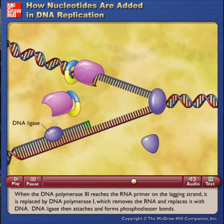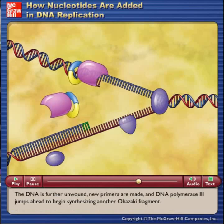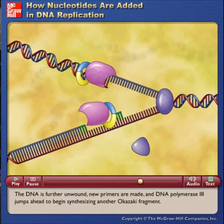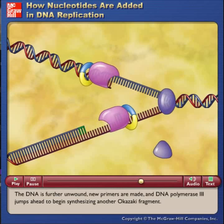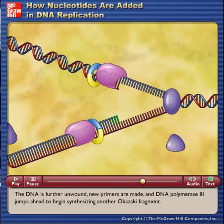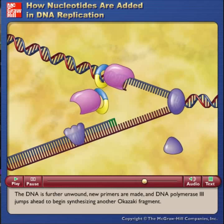DNA ligase then attaches and forms phosphodiester bonds. The DNA is further unwound, new primers are made, and DNA polymerase III jumps ahead to begin synthesizing another Okazaki fragment.